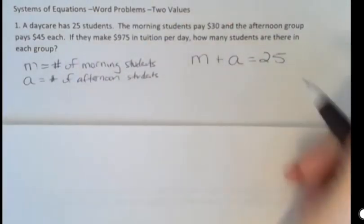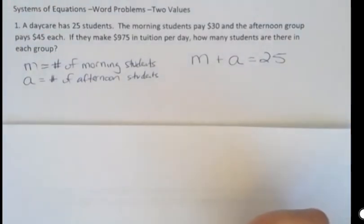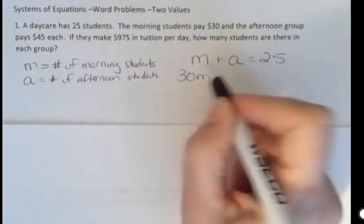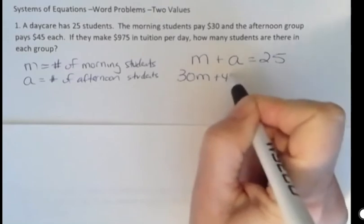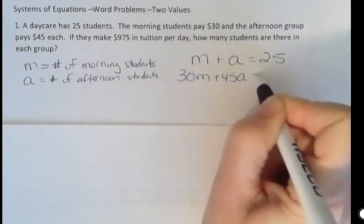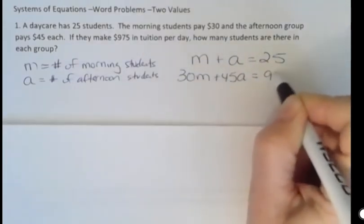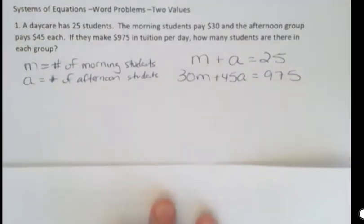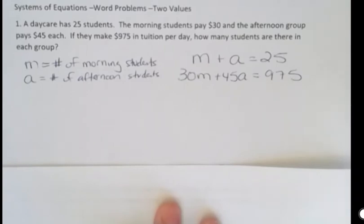The second equation is going to have to do with the tuition that they pay. So the morning students pay $30 a piece and the afternoon students pay $45 a piece and they have a total income of $975. So there's my two equations and now I just have to solve that using whichever method I prefer.